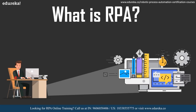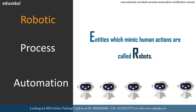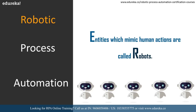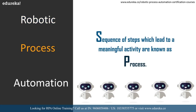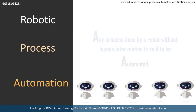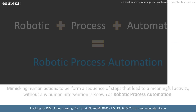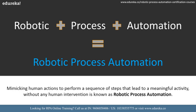In RPA you have to understand three terms: robotic, process, and automation. Robotic — robots mimic human actions. Process — any robot which has to automate a task must follow a sequence of steps, and those sequence of steps are nothing but a process. Automation — doing the task without any human intervention. When we combine all three, robots mimicking human actions to perform tasks without human intervention by following a process is robotic process automation.